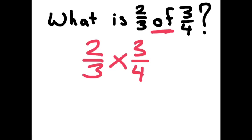The steps to multiplying fractions: multiply the numerators. So 2 times 3 is 6, and the denominators, 3 times 4 is 12.